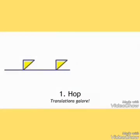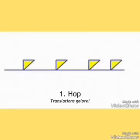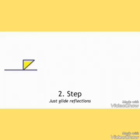One, pop — you just use translation. Two, step — you just use glide reflection.